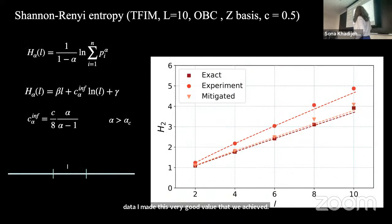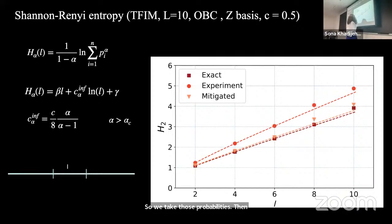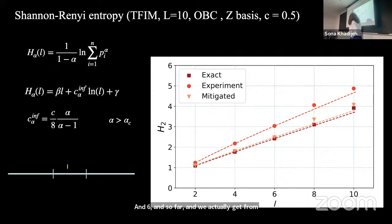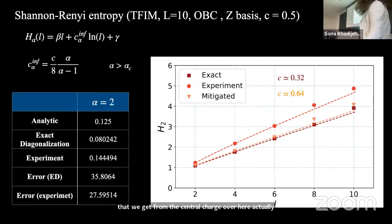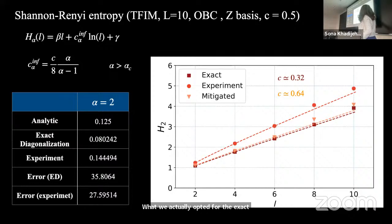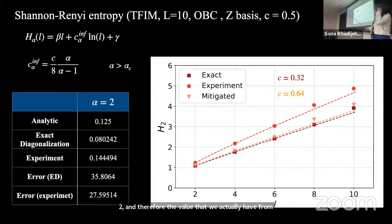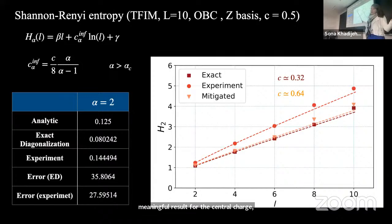Once we have the probabilities—these are measurements in the Z basis—we take them, calculate the associated Rényi entropy, and for a system size of 10 look at subsystems of size 2, 4, and 6. The central charge value we obtain from exact diagonalization at system size 10 is about 0.32, representing roughly 30% error from the true value of one-half. The experimental mitigated result gives 0.64. This tells us that even with exact diagonalization we cannot get a meaningful central charge result for the open boundary condition due to finite-size and boundary effects.